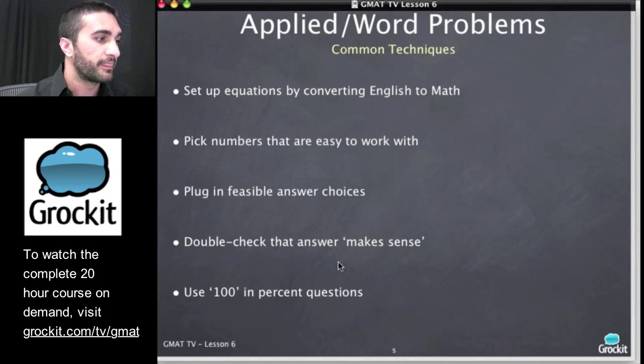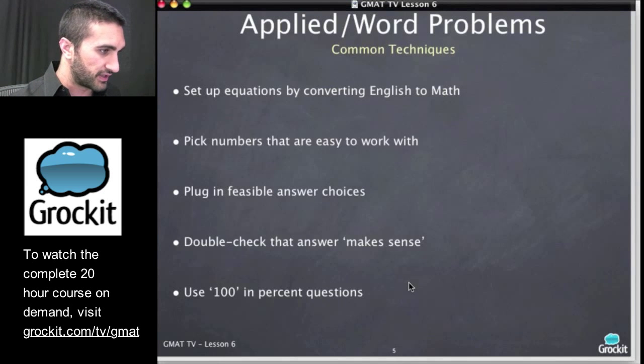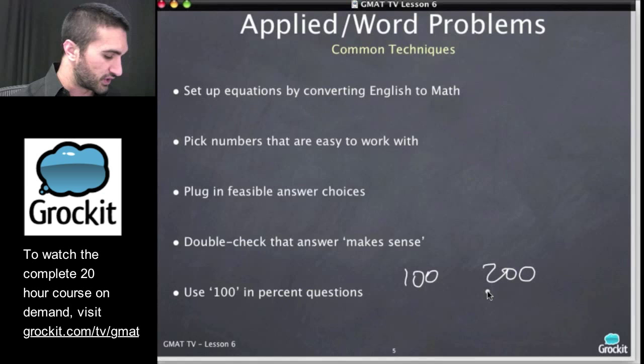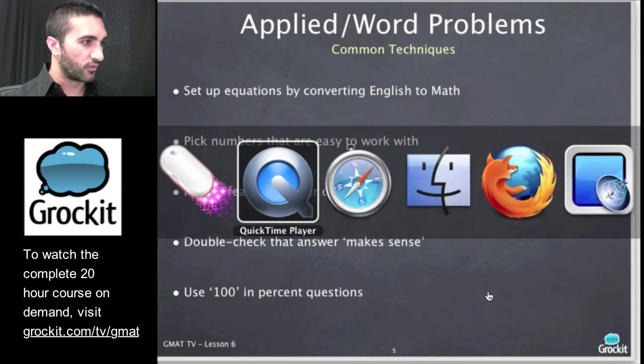Plug in answer choices, just try them out. If there are discrete values in the answer choices we can try them out. Double checking our answers, this has to do with eliminating some of the extreme answers because they're just not within the ballpark of what this question should reasonably be able to get us. We can't have negative numbers of chairs in a room, so just make sure that the answers make sense and you can eliminate some that are just out of the range of sense. And obviously using 100 in percent questions works really well, and so does 200, they're both pretty easy numbers to manipulate.